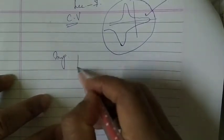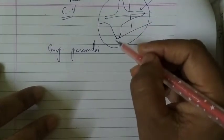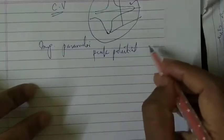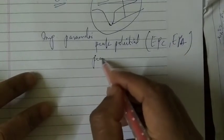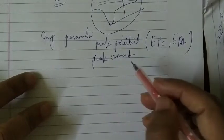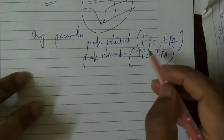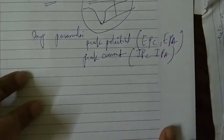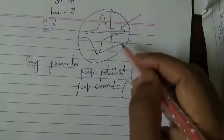The important parameters in the cyclic voltammetry plot are the peak potential, denoted by Epc or Epa, and the peak current, denoted by Ipc and Ipa — the current and EMF of the cathodic peak and anodic peak. These are the key points we obtain from this graph.